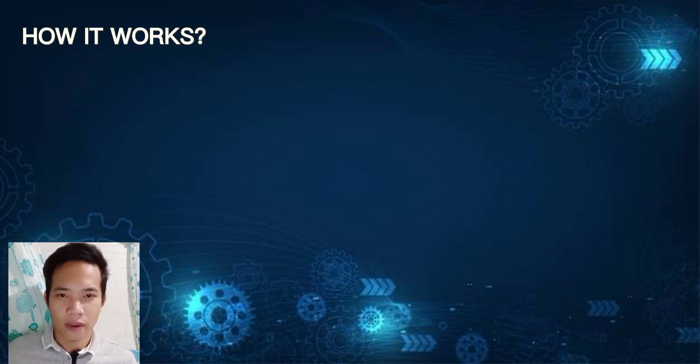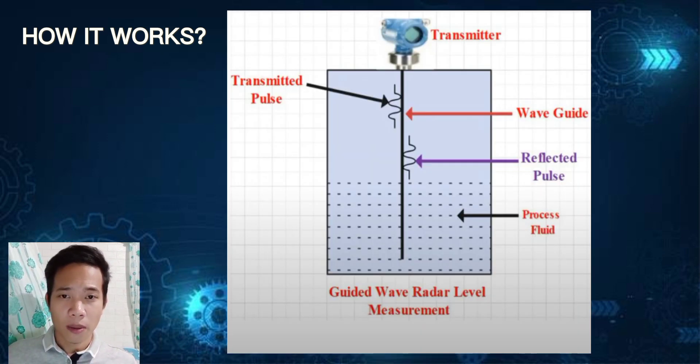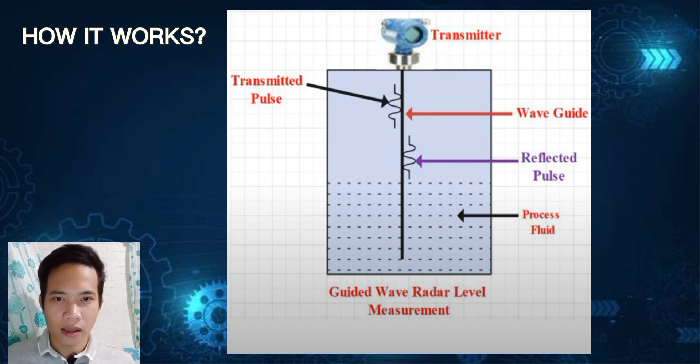How does the guided wave level sensor work? The microwave signal is sent down to the waveguide probe and travels along its length. When the microwave signal reaches the surface of the material, it reflects back towards the electronic unit.